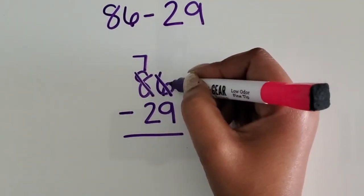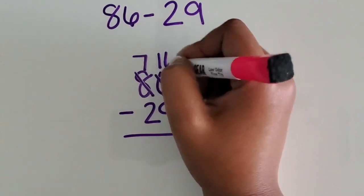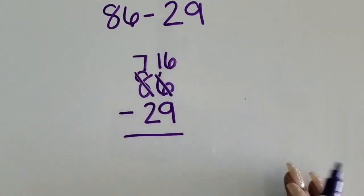If I regroup that 10 to the 1s place, that gives me 10 more 1s than 6, which is 16 1s.